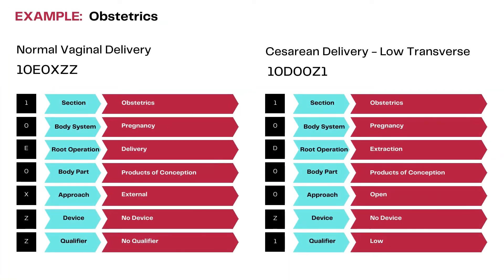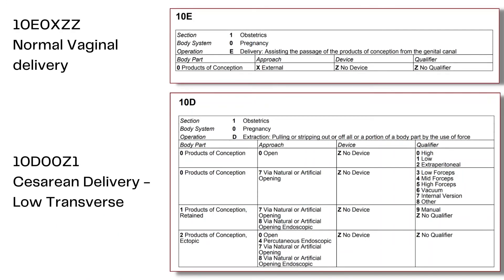Here are two examples for a normal vaginal delivery and a low transverse cesarean section. The approach for normal delivery is always external, and for C-section it is open. Both are coded to the obstetric section with body system value of pregnancy. The root operation for normal vaginal delivery is delivery, but for C-section it is extraction. The body part value is products of conception for both procedures. There is no device involved, but for C-section the qualifier identifies the type — in this case low transverse, so the qualifier value is low.